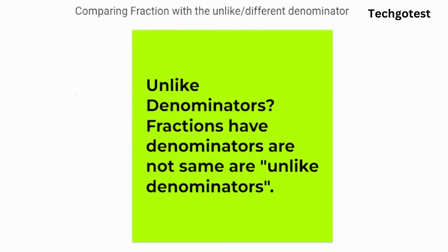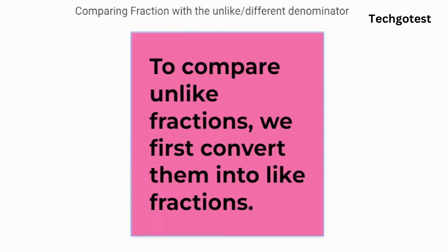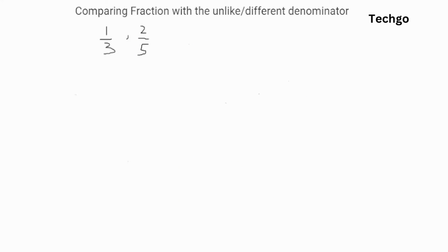Let's start today's topic: comparing fractions with unlike or different denominators. First, what are unlike denominators? Fractions that have denominators that are not the same are unlike denominators. To compare unlike fractions, we first convert them into like fractions. Now let's compare fractions 1/3 and 2/5. First we convert these fractions into like denominator form.